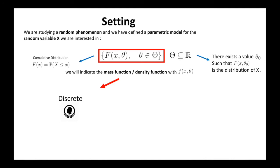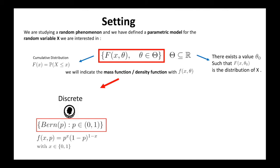Let's see two important examples. For the discrete case, we can consider as random experiment the result of throwing a coin, and as random variable the function that takes the value of 1 for the head and 0 for the tail. If we indicate with p the probability of getting a head, we can write a mass function as on the slide. We indicate the model with Bernoulli(p), with p between 0 and 1.